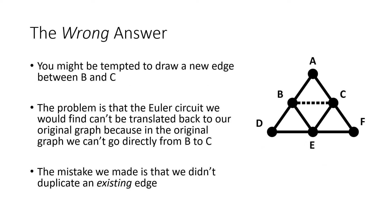Now for part B. You might be tempted to draw a new edge from B to C. Our degrees were A: 2, B: 3, C: 3, D: 2, E: 4, F: 2. Drawing that new edge makes B degree 4 and C degree 4, so the new graph does have an Euler circuit. But the problem is that the path would have us go from B directly to C, and we can't do that on the original graph — that's crossing a bridge that isn't there.